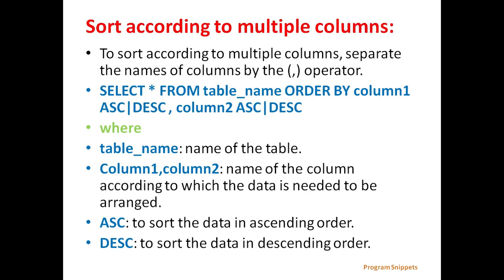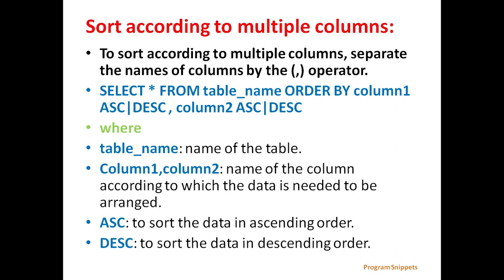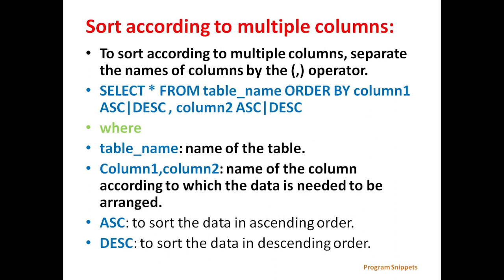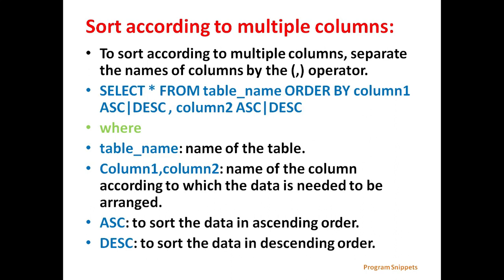The second method is sorting according to multiple columns. To sort by multiple columns, we separate the column names with a comma. The general syntax is SELECT * FROM table_name ORDER BY COLUMN1 ASC or DESC, COLUMN2 ASC or DESC, where COLUMN1 and COLUMN2 are the names of the columns by which the data is to be sorted.